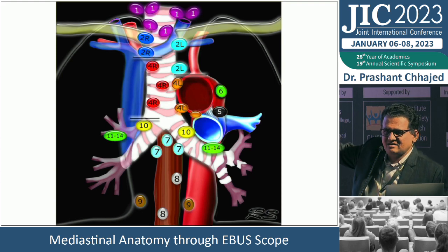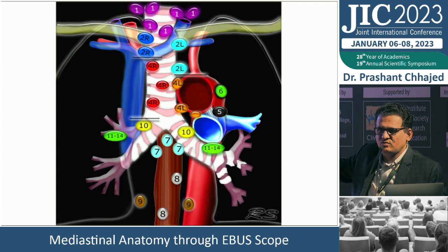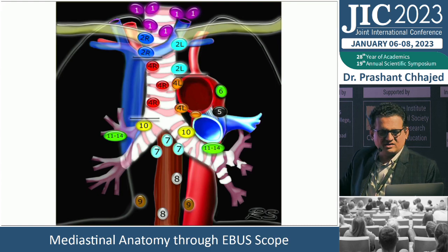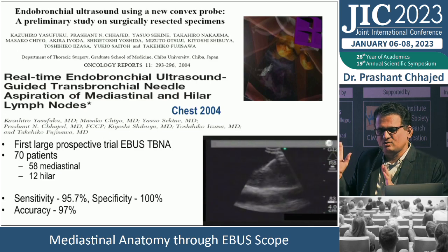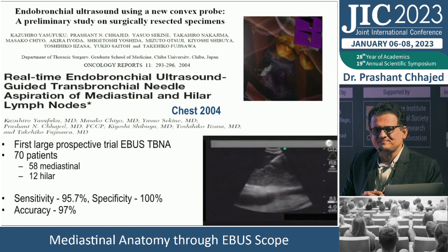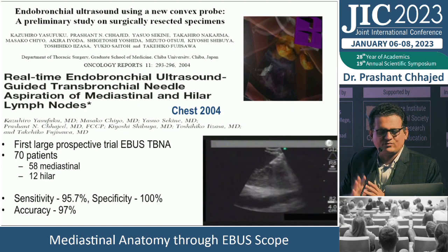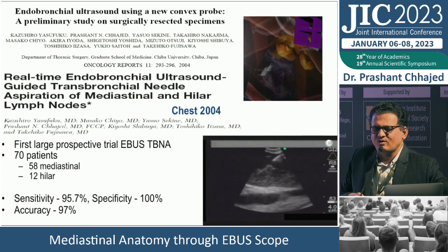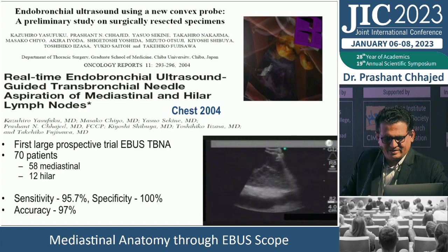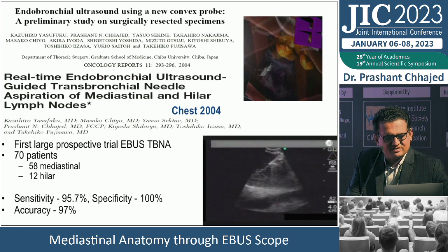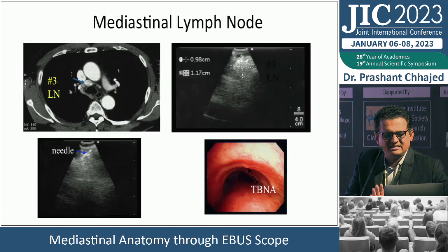Knowing the anatomy chart is very important — even earlier speakers emphasized this. The lymph node station levels are extremely important to prevent inadvertent puncture and ensure proper diagnosis. EBUS has been around 20 years — papers published in 2004, work starting in 2002. In 20 years, everyone is now aware of EBUS TBNA sensitivity, specificity, techniques, and benefits.